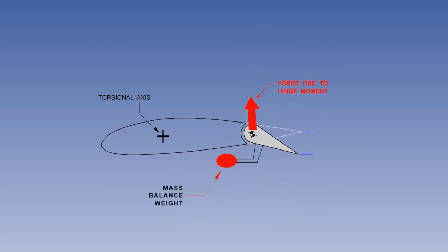A weight is added in front of the hinge to move the CG of the control surface forward onto the hinge line. To minimise the size of the mass balance weight, the weight is sometimes mounted on an arm, as illustrated.